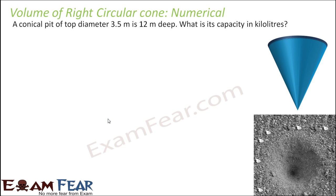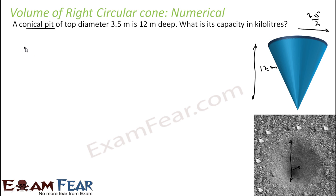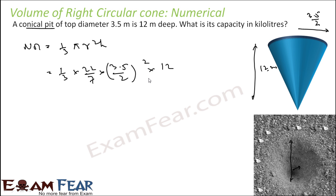A conical pit of top diameter 3.5 m, so radius = 3.5/2 m, and depth 12 m. We find the volume: (1/3)πr²h = (1/3)(22/7)(3.5/2)²(12) = 38.5 m³. Since 1 m³ = 1 kilolitre, the capacity of the pit is 38.5 kilolitres.